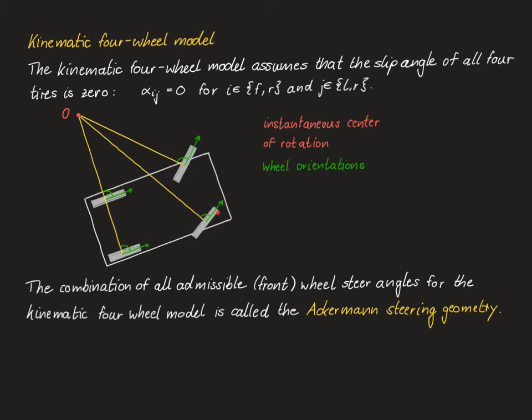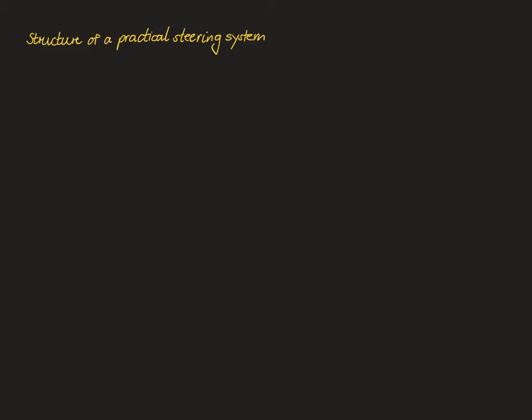On a short historical side note, the Ackermann steering geometry is named after Rudolf Ackermann, a British-German businessman who patented the pivot steering system for horse carriages that was originally developed by the German engineer Georg Lankensberger. In order to see how this Ackermann geometry is realized or at least approximately realized in practice, let's look at the main structure of a practical steering system.